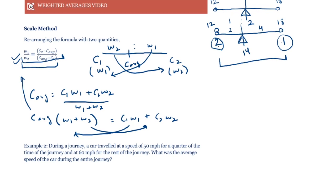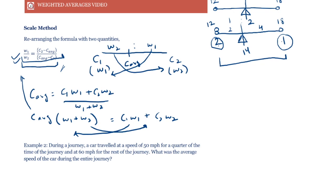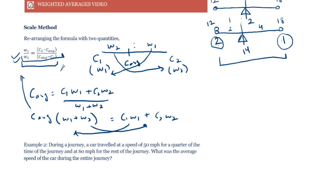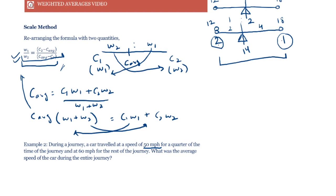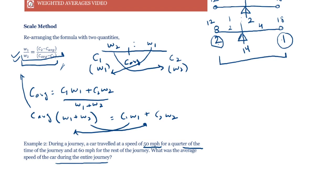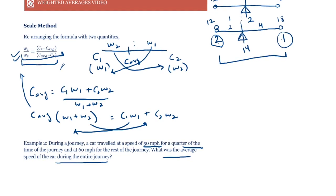This formula is extremely useful. Let's look at an example. During a journey, a car traveled at a speed of 50 mph for a quarter of the time. We need to find the average speed. What was the average speed of the car during the journey?